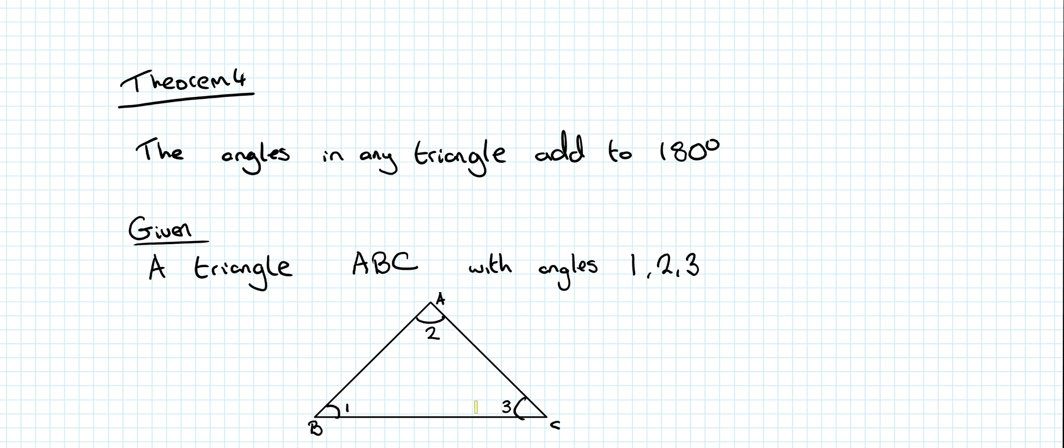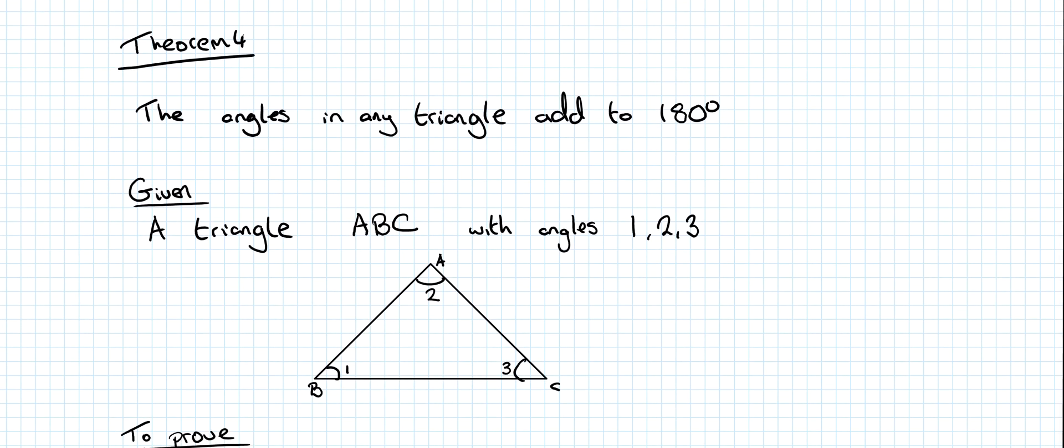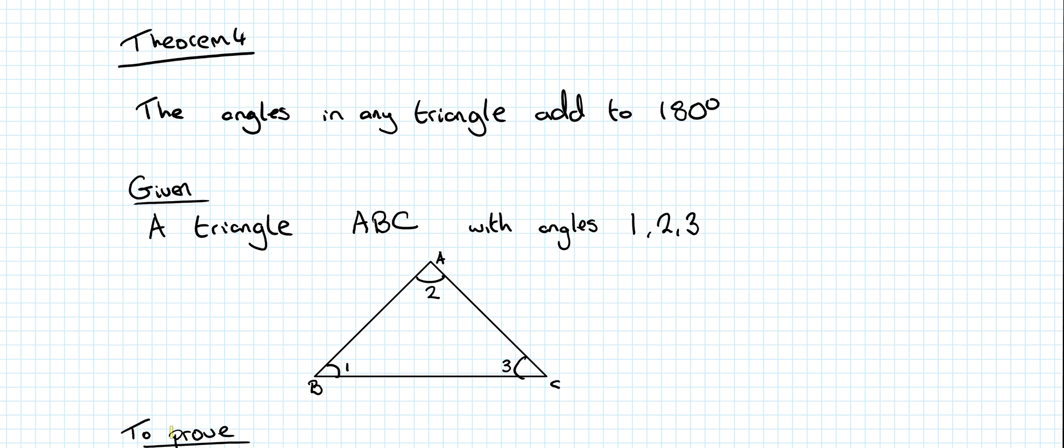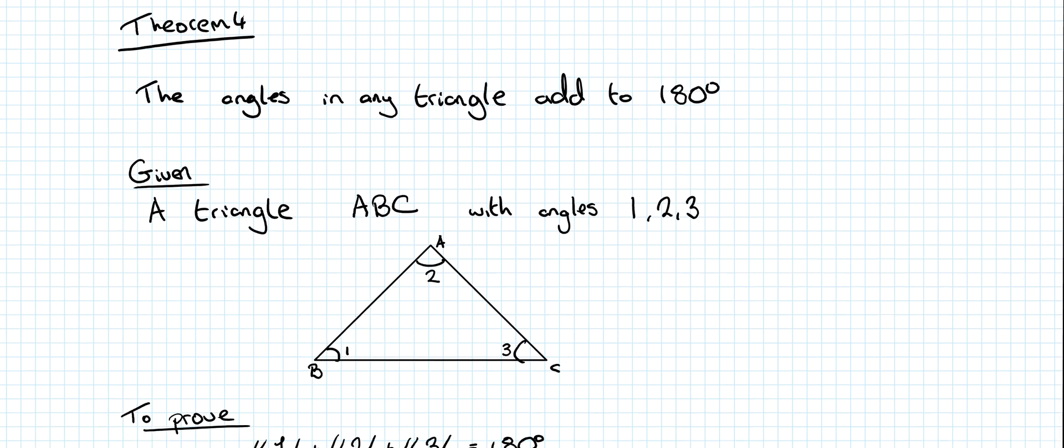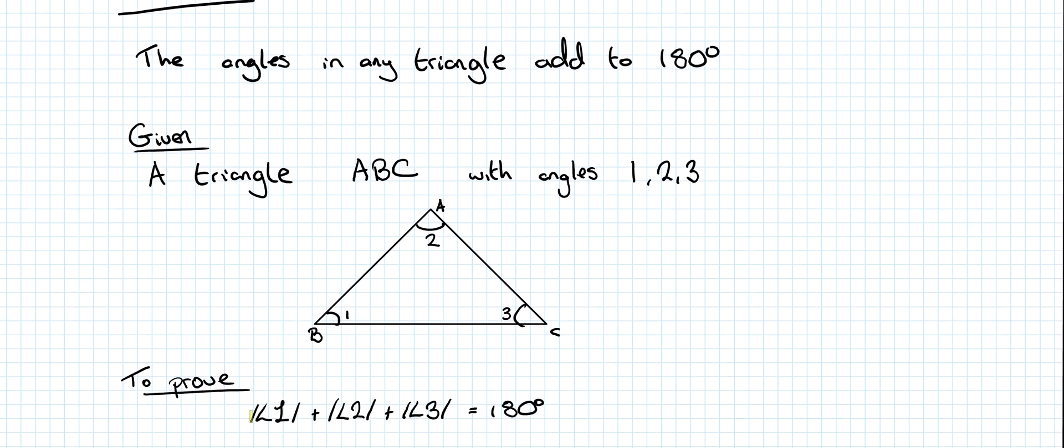There will be a section that says 'To Prove.' In here, you want to restate, essentially, what was asked. You want to prove that angle 1 plus angle 2 plus angle 3 equals 180 degrees. These lines here mean the measure of—important to include. So it says the measure of angle 1 plus the measure of angle 2 plus the measure of angle 3 equals 180 degrees.